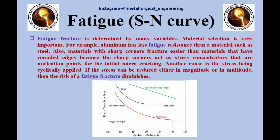SN curves are derived from fatigue tests. Tests are performed by applying a cyclic stress with constant amplitude (CA) on specimens until failure. An SN curve is a plot of the magnitude of an alternating stress versus the number of cycles to failure for a given material. Metals like steel have a fatigue threshold or endurance limit, while aluminum does not have any specific endurance limit, as shown in the figure.